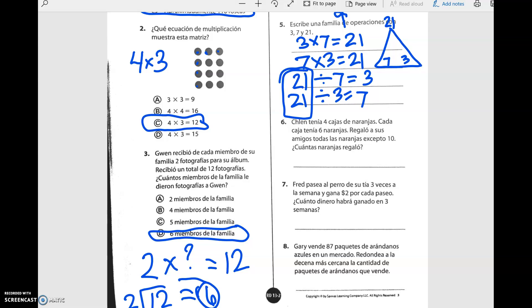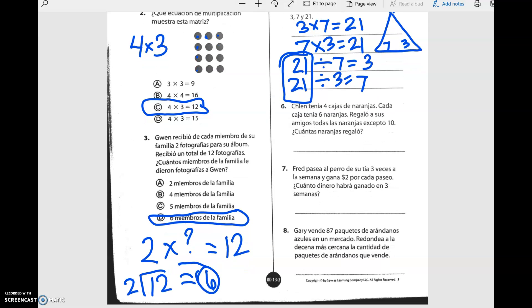Chlen tenía cuatro cajas de naranjas. Cada caja tenía seis naranjas. Regaló a sus amigos todas las naranjas excepto diez. ¿Cuántas naranjas regaló? Primero vamos a multiplicar. Seis por cuatro es igual a veinticuatro. She had veinticuatro naranjas. Y aquí, léelo con cuidado. Read this very carefully.